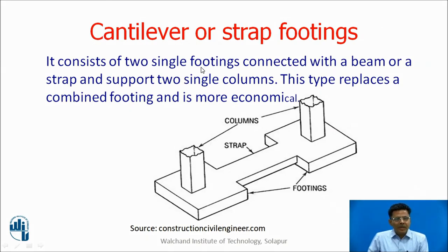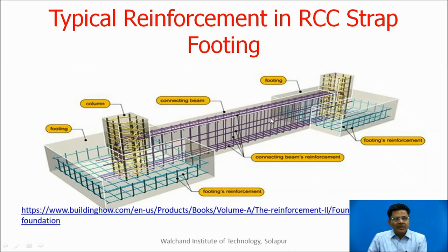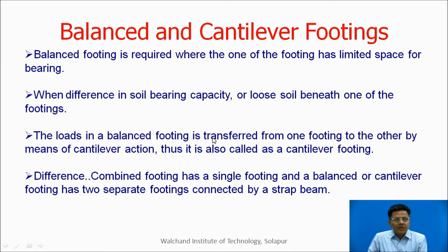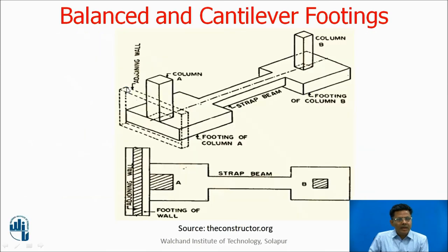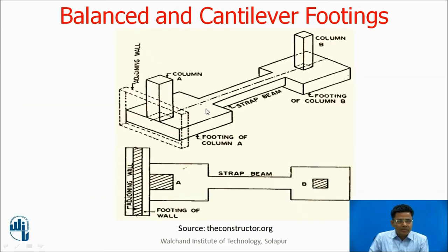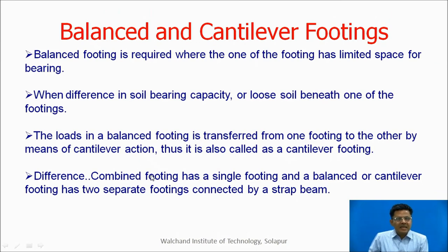A cantilever or strap footing consists of two single footings — footing 1 and footing 2 — connected with a beam or strap and supporting two single columns. This type replaces a combined footing and is more economical. Balanced and cantilever footings are used when one footing has limited space for bearing, when there is a difference in soil bearing capacity, or when loads need to be transferred from one footing to another by cantilever action. The difference from a combined footing is that combined has a single footing, while balanced or cantilever footing has two separate footings connected by a strap beam.